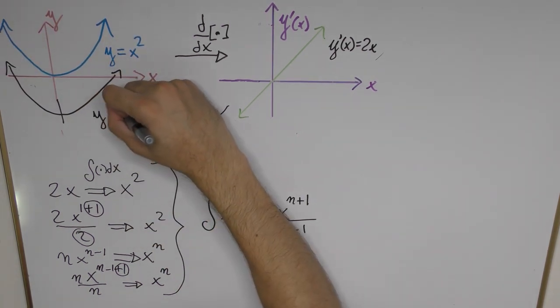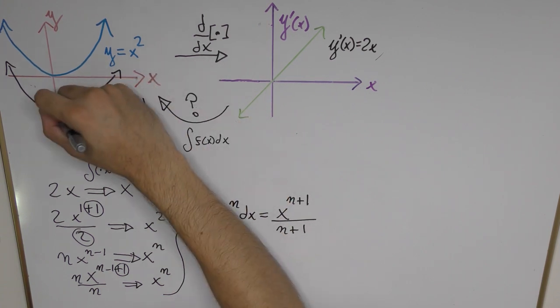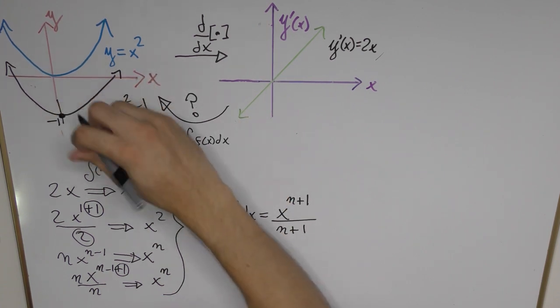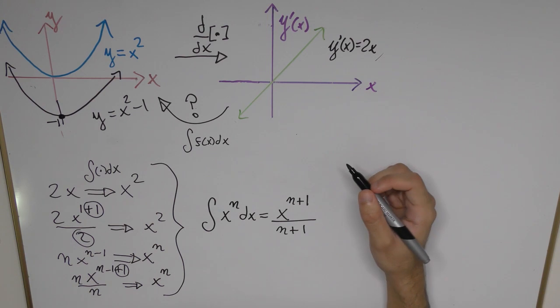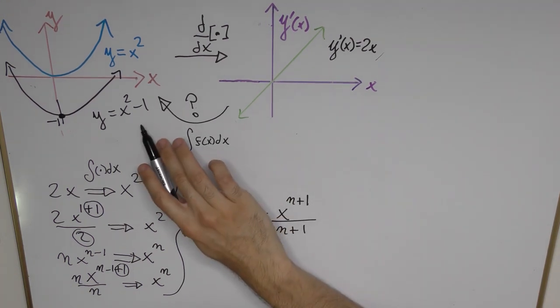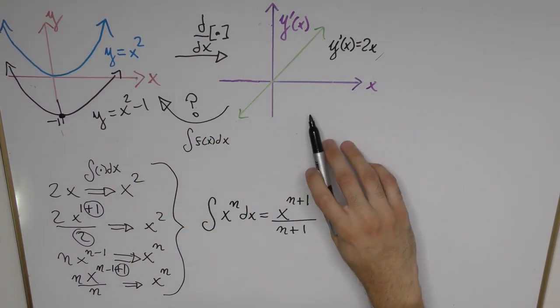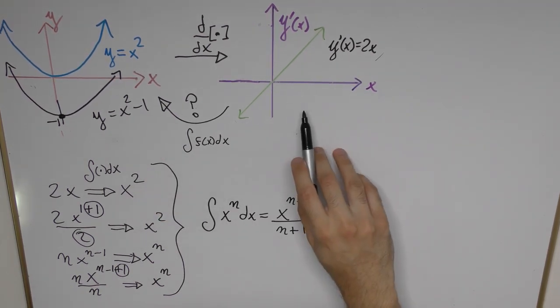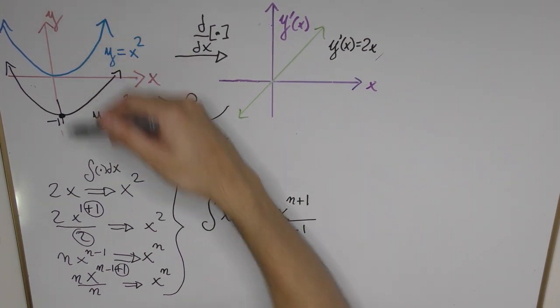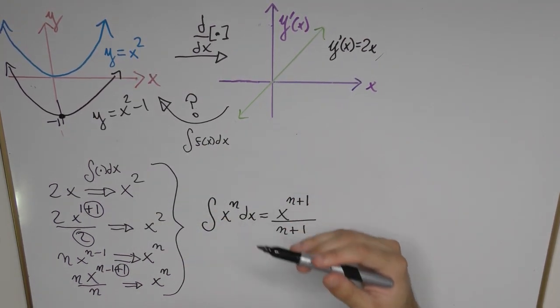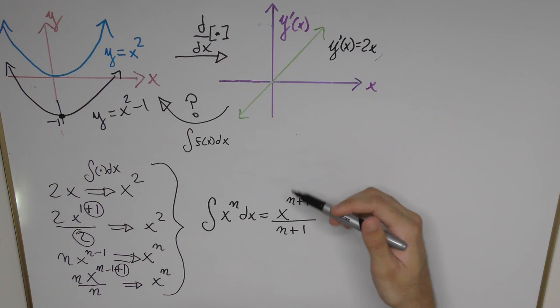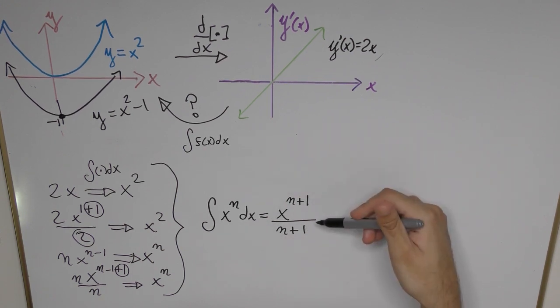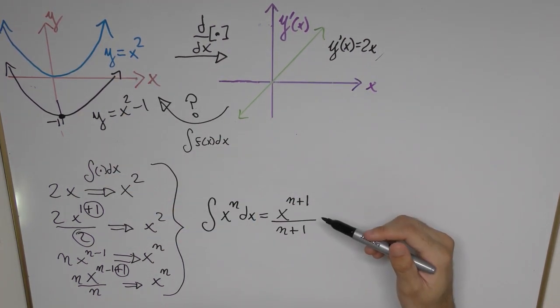If we take the derivative of that we're still going to get the exact same function y prime equals 2x because the constant is going to become zero. So no matter where you place that parabola you're still going to get the same derivative. This integral here doesn't tell you which of those parabolas we're going to get or which function we're going to get out of that operation.